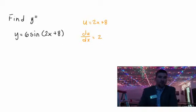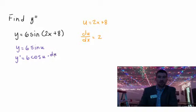Alright, so what am I really working? I'm really working y equals 6 sine u. And when I take the derivative of this, the first derivative, y prime is going to be 6 times cosine of u times du dx.